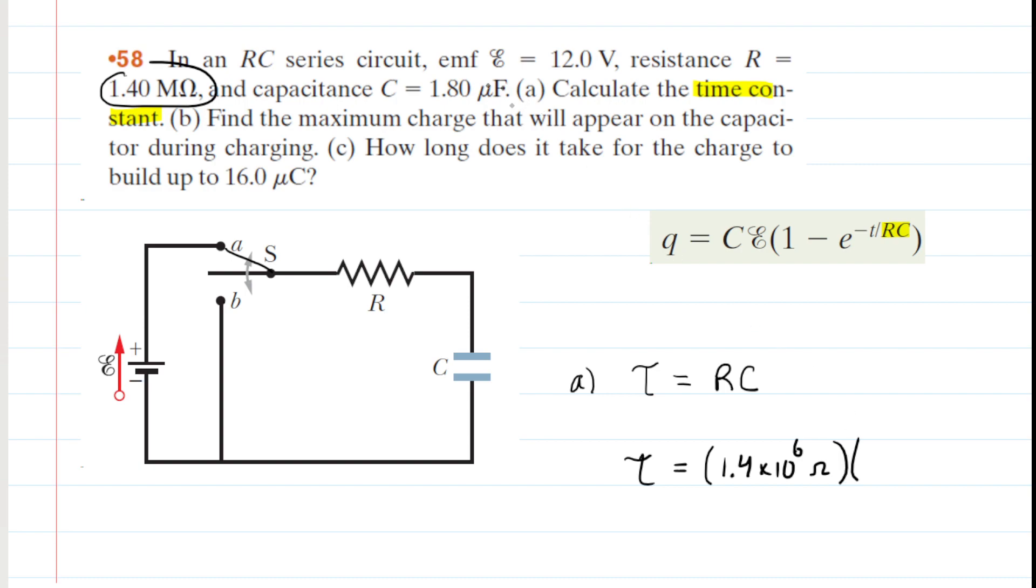And then the capacitance is given in microfarads, so we have to multiply the value by 10 to the negative 6 to get it into the standard unit of farads. So you would then just multiply those values together, and you would get 2.52 seconds as the value of the time constant. So that is the correct answer to part A of the question.